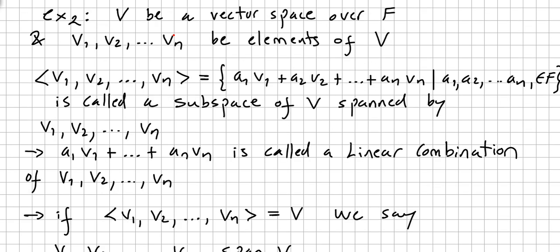A second example. Let V be a vector space over F, and V1, V2, ..., Vn be elements in the vector space. Consider the set of all A1·V1 + A2·V2 + ... + An·Vn, such that A1, A2, ..., An are in the field. This set is called a subspace of V spanned by these vectors.